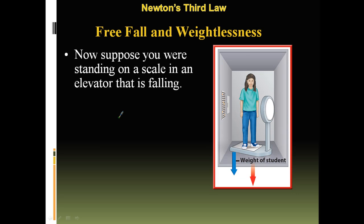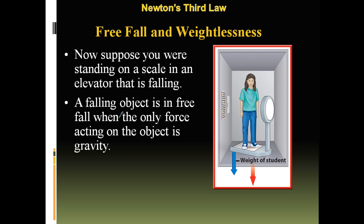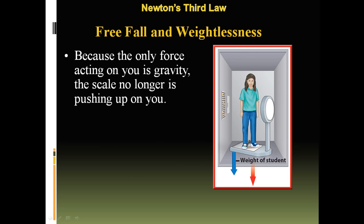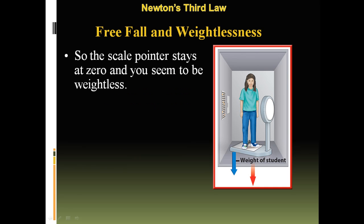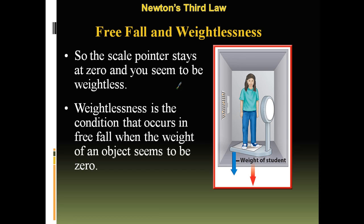Now suppose you're standing on a scale in an elevator that is falling. Cable snaps, elevator falls at 9.8 meters per second squared, you fall at 9.8 meters per second squared. You're all in free fall because gravity is the only thing acting on you. Because the only force on you is gravity, the scale is no longer pushing you up. So according to Newton's third law, you no longer push down on the scale. The scale pointer stays at zero and you seem to be weightless. You're not actually weightless, it's just apparent weightlessness. Weightlessness is the condition that occurs in free fall when the weight of an object seems to be zero.